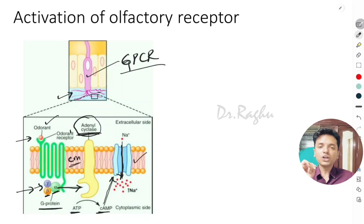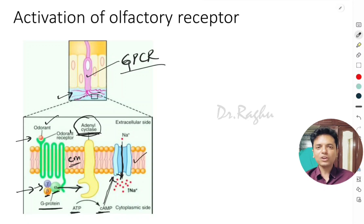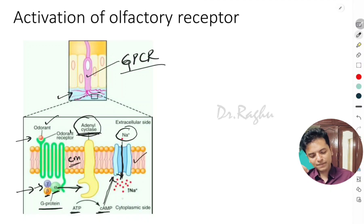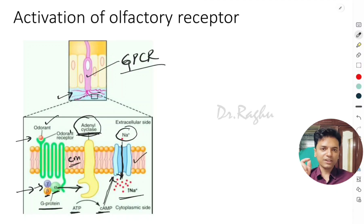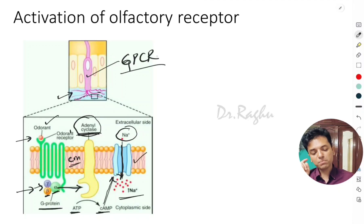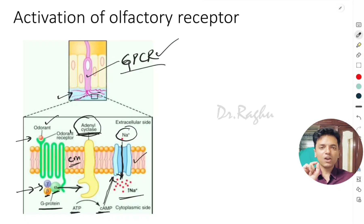Once adenyl cyclase is activated, it converts ATP into cyclic AMP. This cyclic AMP acts as the second messenger and causes activation and opening of sodium channels in the cell membrane. Once sodium channels open, sodium from the extracellular side enters inside, causing depolarization and hence activation of the cell. This is how the olfactory receptor gets activated — via the G-protein coupled receptor.